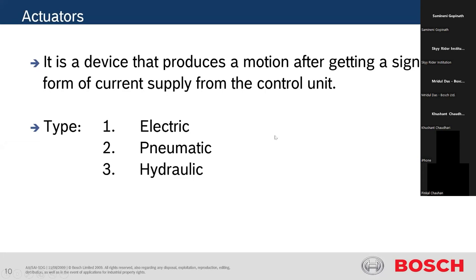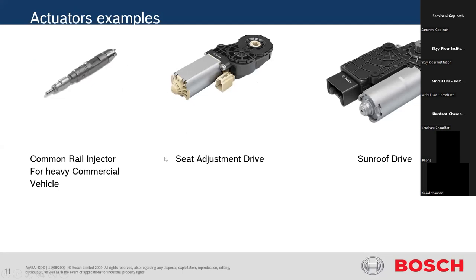An actuator is basically a device that produces motion after getting a signal in the form of current supply from the control unit. It is a mechanical tool that gets current supply from the control unit and actuates or produces motion. There are three basic types of actuators: electric — which gets electrical supply; pneumatic — which works using gas or air; and hydraulic — which works on the principle of fluid mechanics.